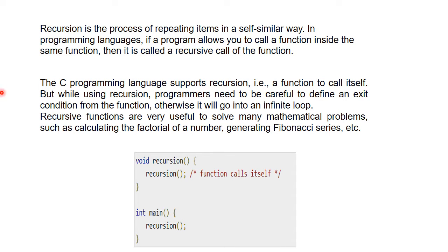The C programming language supports recursion — it allows any function to call itself. But while using recursion, the programmer needs to be careful to define an exit condition from the function; otherwise it will go into an infinite loop. You will have to terminate the function forcefully.